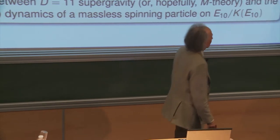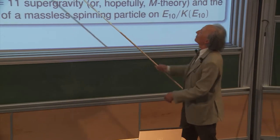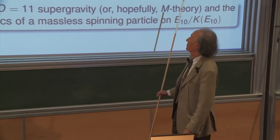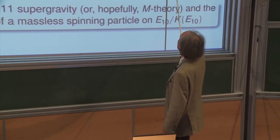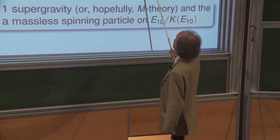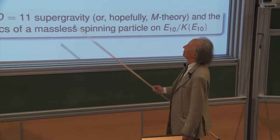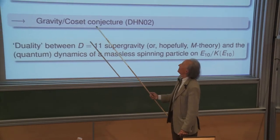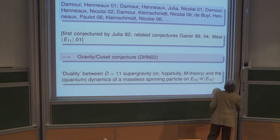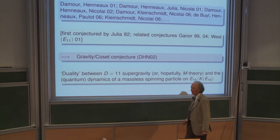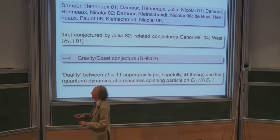The topic I'm going to talk about is hyperbolic Kac-Moody structure — something which was first conjectured by Bernard Julia back in 1982. It is connected to other related ideas, like conjectures by Ganor and by Peter West concerning E11. What we found evidence about was the hidden role of E10, which is a hyperbolic version of E8, in supergravity in 11 dimensions.